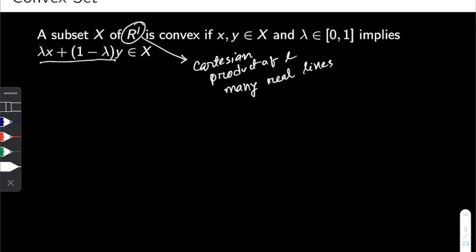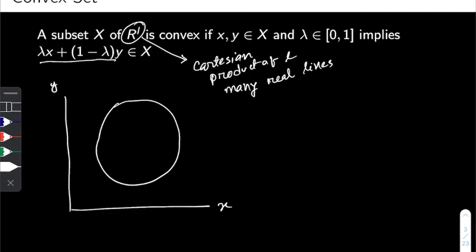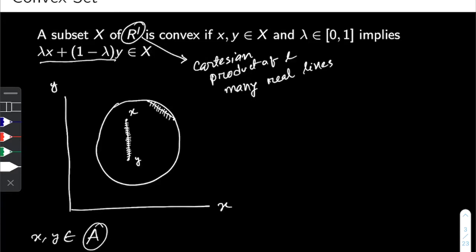Now let's understand the concept of convex sets with an example. In the R2 case, if this circle represents a set A and I pick any two points X and Y which belong to this set, then the definition says that if I draw a straight line between these two points, all the possible points that sit on this line will also be elements of this set. If this is true, then the set is convex. Even picking points on the boundaries, all combinations on the connecting line are contained within the set, so set A is a convex set.